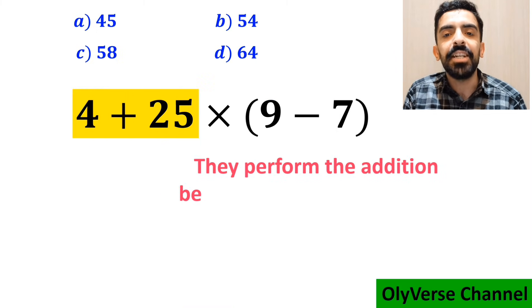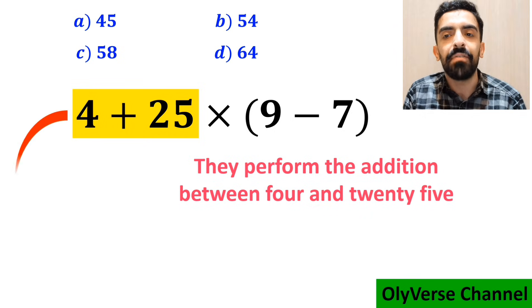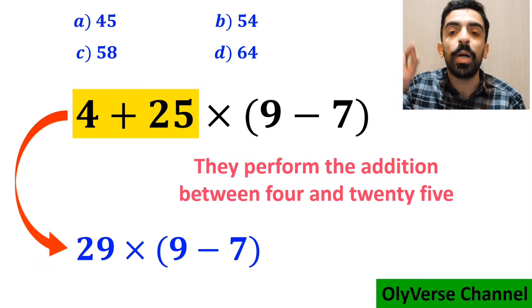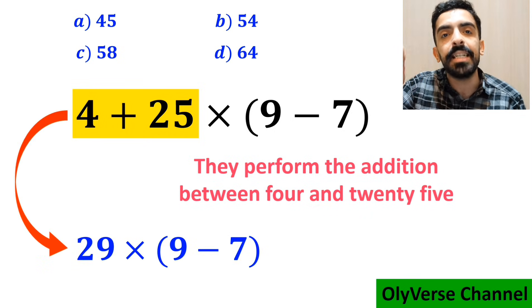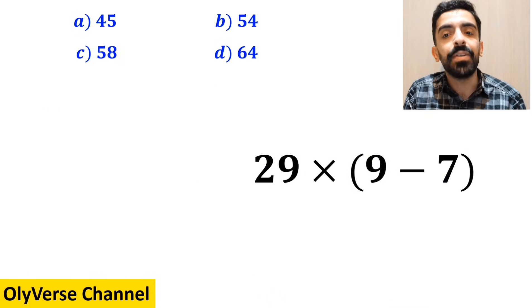Then they perform the addition between 4 and 25, and simplifying this expression to 29 times (9 - 7).